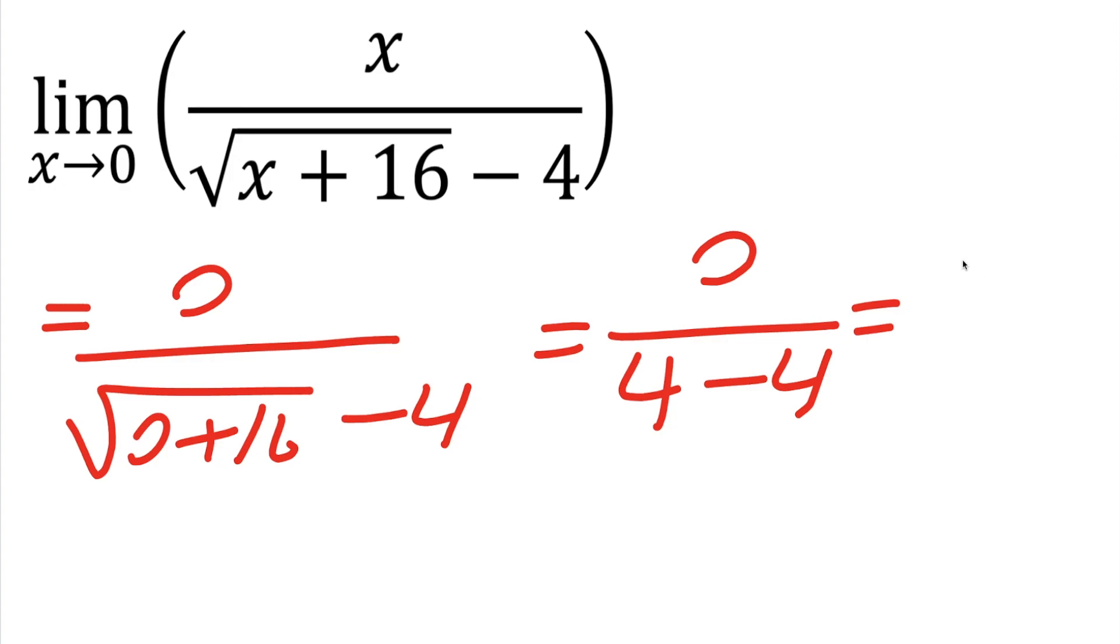which is going to be 0. So we get 0 divided by 0, and whenever we get dividing by 0, that's our major red flag that we have to manipulate this original equation to try to solve this problem.